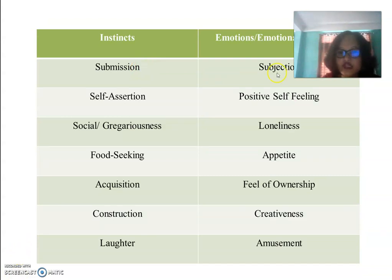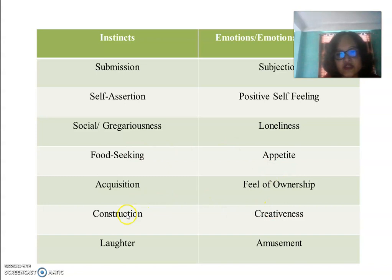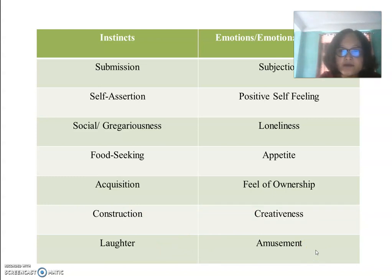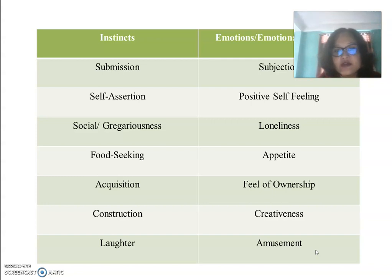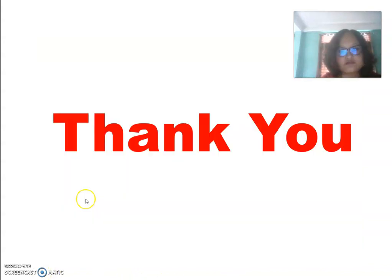The remaining principal instincts forwarded by McDougall are: submission (subjection/negative self-feeling), self-assertion (positive self-feeling), gregariousness (loneliness), food seeking (appetite), acquisition (feeling of ownership), construction (creativeness), and laughter (amusement). In summary, instincts are innate tendencies or innate dispositions present in any living organism — unlearned and existing in both human beings and animals — though instincts can be modified, which will be discussed in the next lecture.